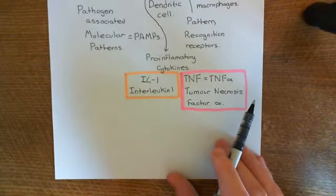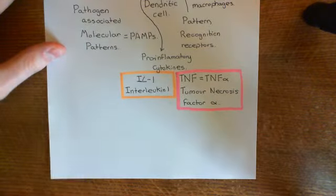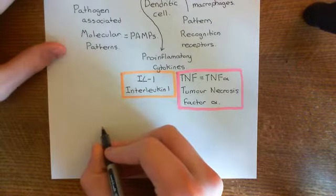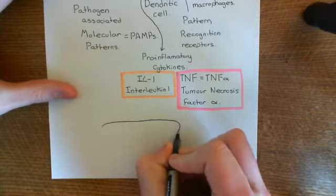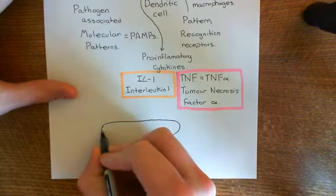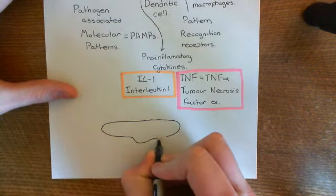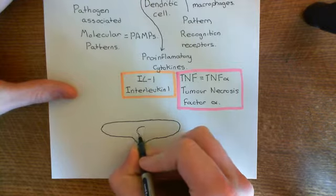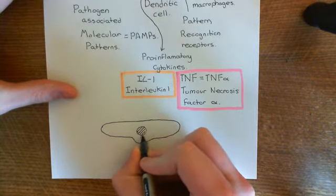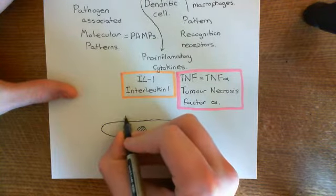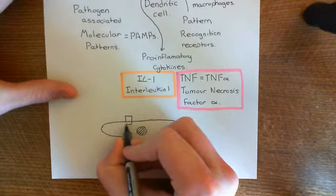Both of these pro-inflammatory cytokines are going to lead to type 2 activation of endothelial cells. On the basolateral surface of our endothelial cell, we have receptors for interleukin-1 and also for TNF-alpha.